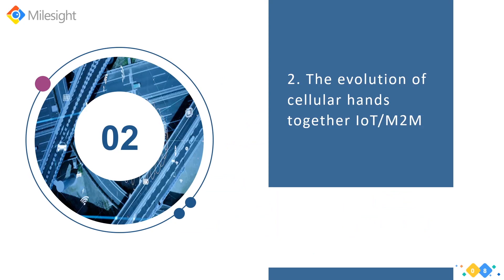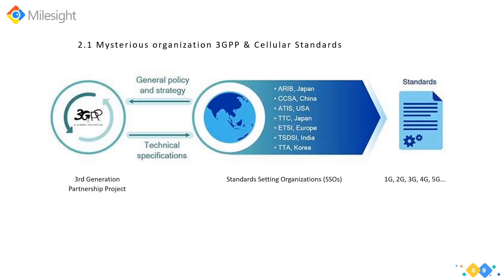Now let's talk about the evolution of IoT, M2M, and cellular, and how it developed to cellular-based LPWAN technologies. When we talk about cellular — 3G, 4G, or even 5G — they are closely related to a mysterious organization: 3GPP. 3GPP is an engineering organization that develops technical specifications, not standards. These technical specifications then become standards through the seven regional standards-setting organizations, or SSOs, that form the 3GPP partnership.